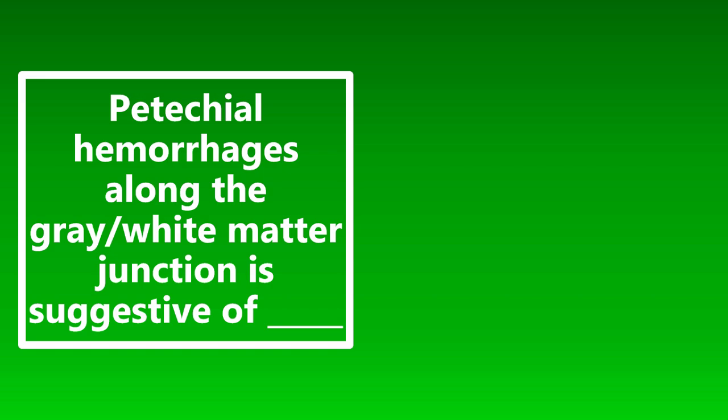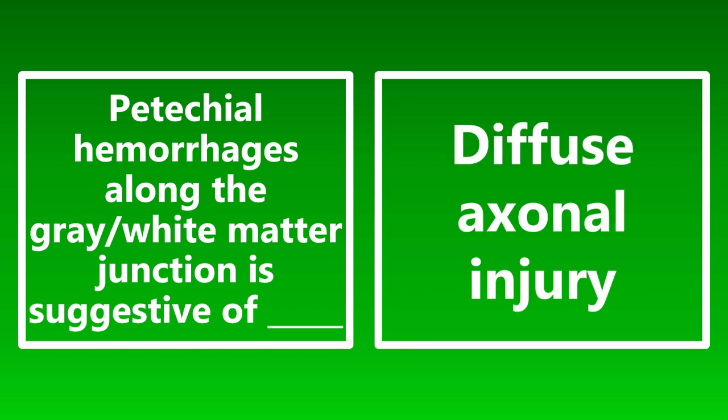Petechial hemorrhages along the gray-white matter junction is suggestive of what? This is suggestive of diffuse axonal injury. If you see this on a CT scan or a radiology report mentions petechial hemorrhages along the gray-white matter junction, this is due to diffuse axonal injury — a pretty severe brain injury.